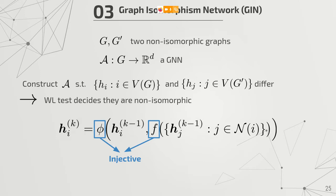Injectivity is something we really want to obtain, which is kind of hard because many functions are injective for sets but not for multisets — which is what we are dealing with here, since node information could be distinct for each neighbor, but some nodes might share the same information. That is why we talk about multisets.